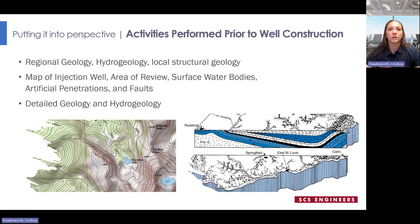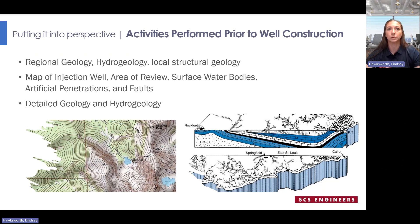Maps of the injection well, area of review, surface waters, artificial penetrations, and faults can be viewed as an overview map of the project site. Information described on these maps, including plume direction and pressure front migration, should be accounted for during the delineation of the area of review and the development of testing and monitoring.